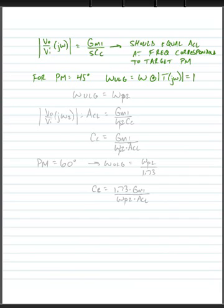In other words, we're going to set omega unity loop gain equal to omega P2, our second pole frequency.